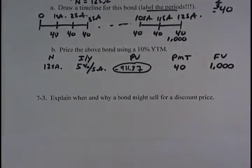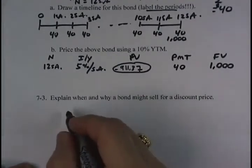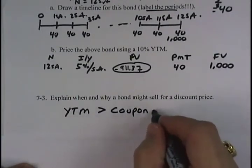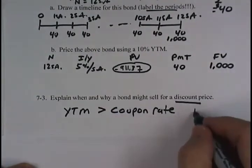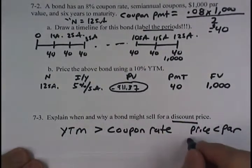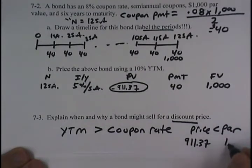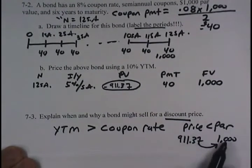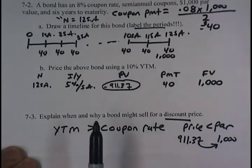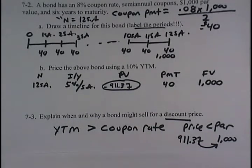Problem 7.3 says explain when and why a bond might sell for a discount price. A bond will sell at a discount when the yield to maturity is greater than the bond's coupon rate. The discount being a price below par means that an example here, this bond, 911.37, versus $1,000 par, that bond's price will move from 911 up to $1,000. That built-in capital gain there gives us additional return over and above the coupon rate. The coupon rate will not give us sufficient return when it is below the yield that investors require. Thus, the bond has to sell at a discount price when that is the case.